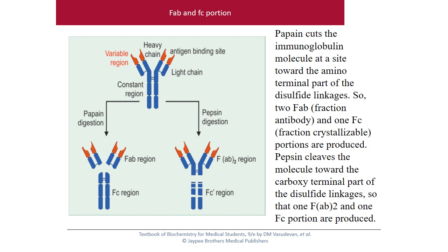The FAB and FC portions are produced when papain cleaves the immunoglobulin molecule at the amino terminal side of the disulfide linkage, producing two FAB portions and one FC (fraction crystallizable) portion. Pepsin cleaves the molecule towards the carboxy terminal side of the disulfide linkage, producing one FAB2 region and one FC region.